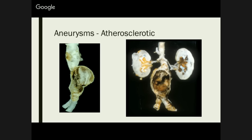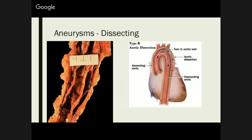Dissecting aneurysms occur within the tunica media — your middle layer of the artery. There are two basic types: Type A involves your ascending aorta, while Type B does not involve your ascending aorta. Type B can never involve the ascending aorta. Type A is the one that tends to be fatal — if the vessel kept ripping going all the way, it could essentially block your coronary artery supply, and it could also result in haemopericardium and a cardiac tamponade.